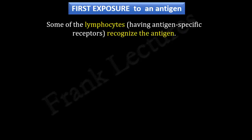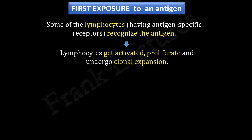Some of the lymphocytes residing in our body recognize this antigen and bind it. This happens because these lymphocytes have antigen-specific receptors on their cell membrane. The lymphocytes specific for the invading antigen are few in number. Once antigen recognition is done, these lymphocytes get activated, they proliferate and undergo clonal expansion. As a result, the number of antigen-specific lymphocytes increases.